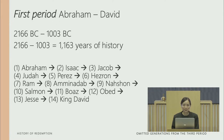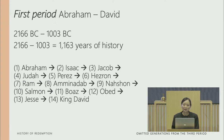The first period in the genealogy of Jesus Christ is from Abraham to David — from 2166 BC, the birth year of Abraham, to 1003 BC, the year David began to reign in Hebron. That gives us 1,163 years of history within the first period, covering 14 generations from Abraham to King David.